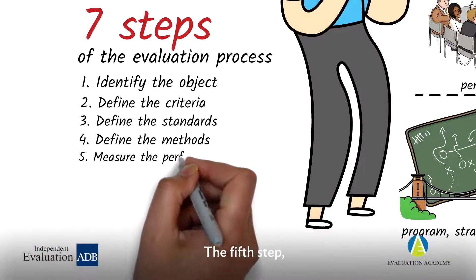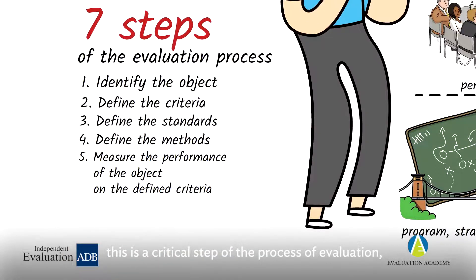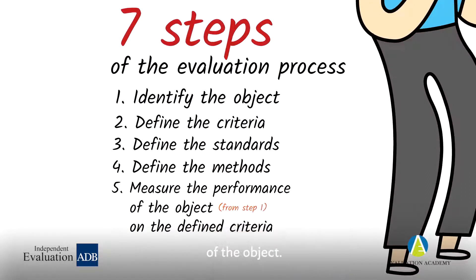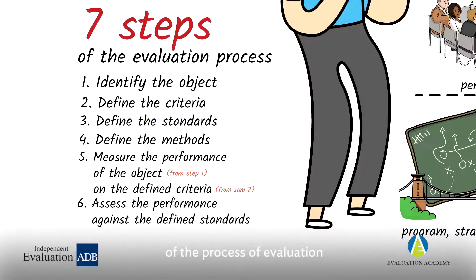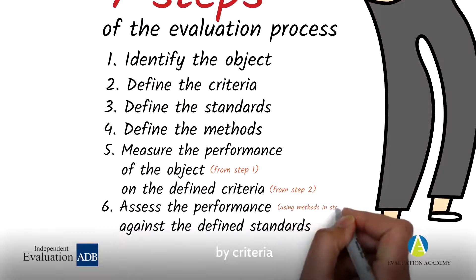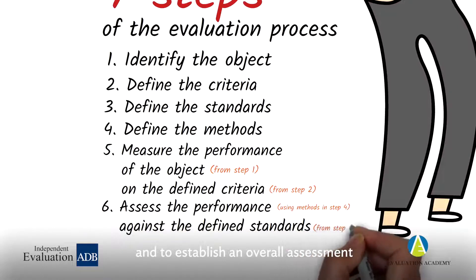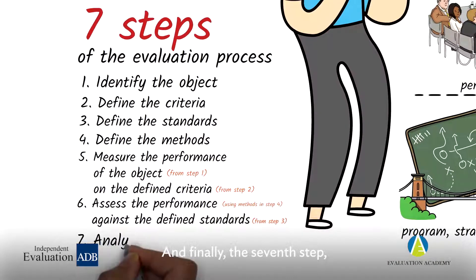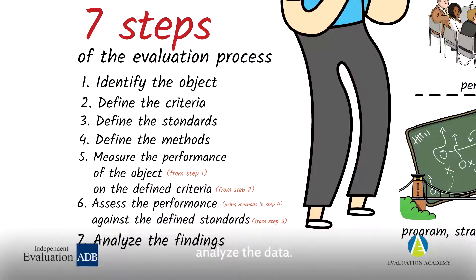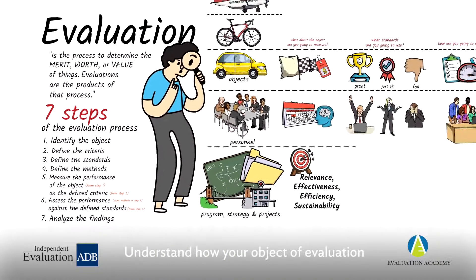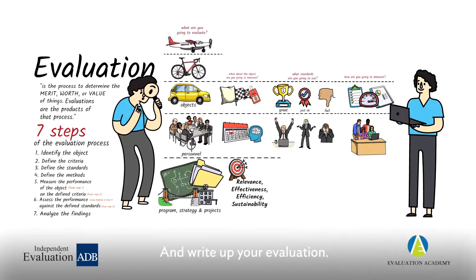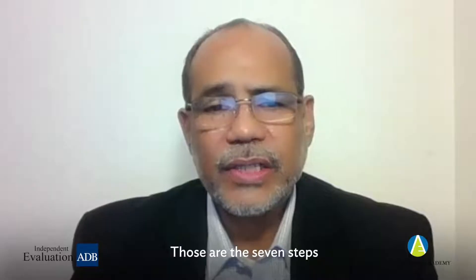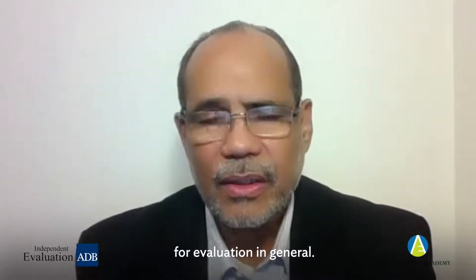The fifth step is the critical step of the process of evaluation: measure the degree of accomplishment of the object, and now it is time to compare with the standards that you have defined. The sixth step is to sum up the assessments by criteria and to establish an overall assessment by summarizing the criteria. And finally, the seventh step: analyze the data, understand how your object of evaluation has performed and why, and write up your evaluation. Those are the seven steps for evaluation in general.